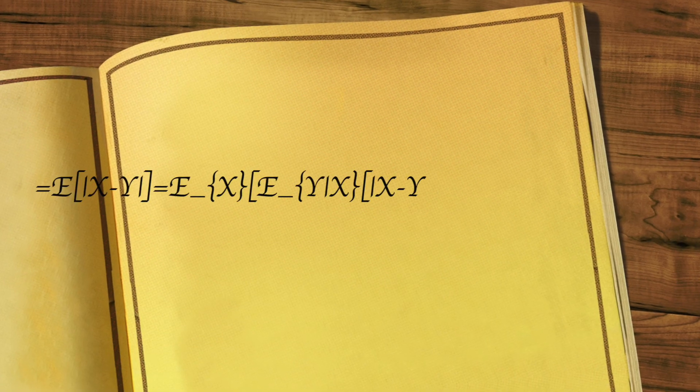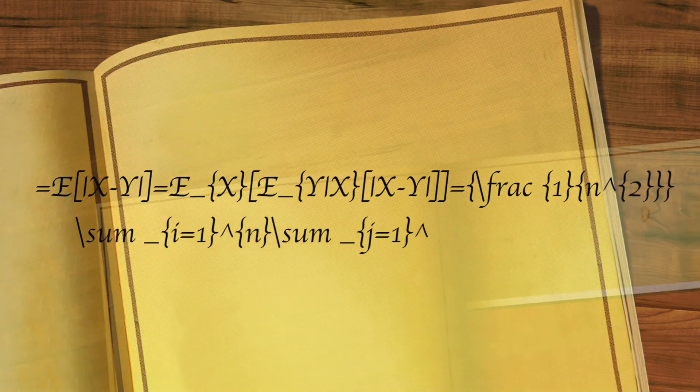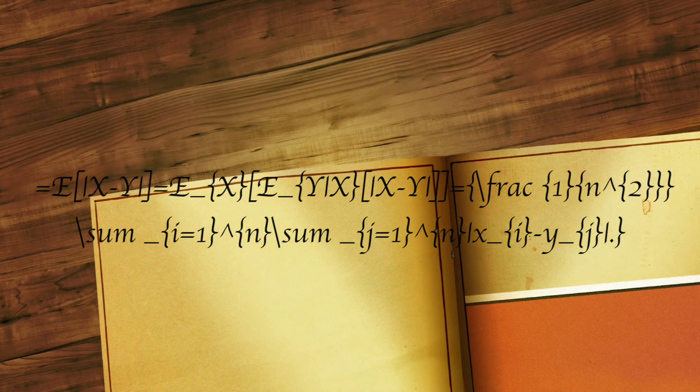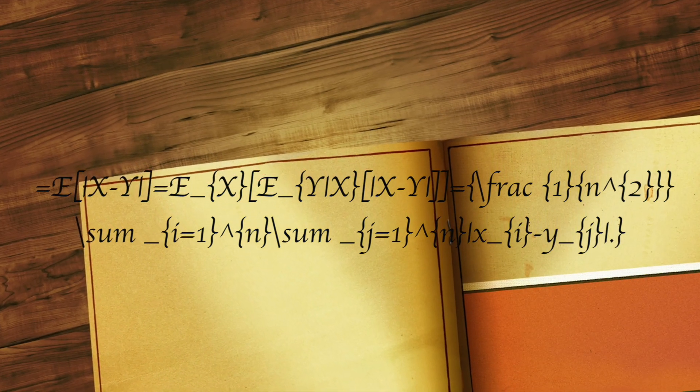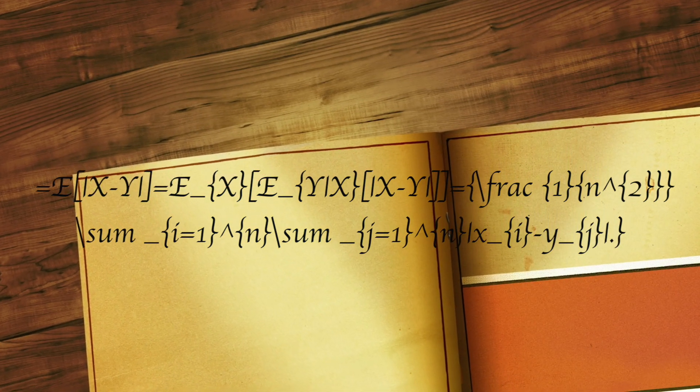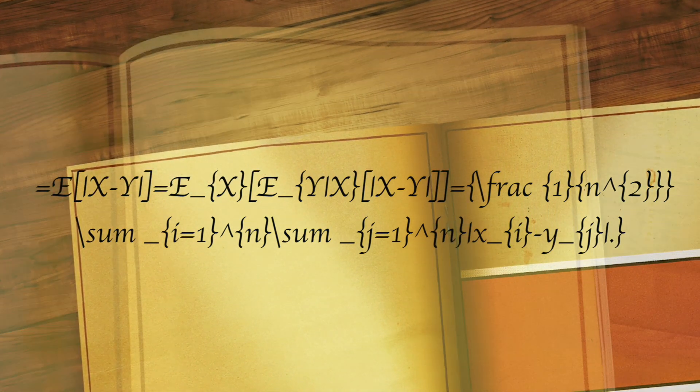Calculating MARD is actually pretty easy. You just take the sample of size N of the population distributed to Q by the law of total... you know what, forget about it. Basically, a lower MARD means more accurate.